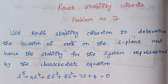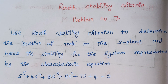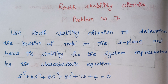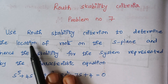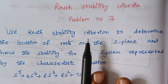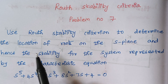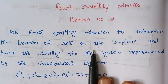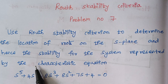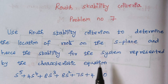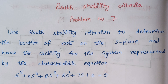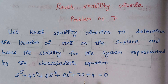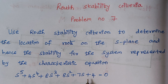Hello viewers, today we are going to solve problem number 7 under the topic Routh stability criteria. Using Routh stability criteria, determine the location of the roots on the S-plane and hence the stability of the system represented by the characteristic equation. This is the given characteristic equation.